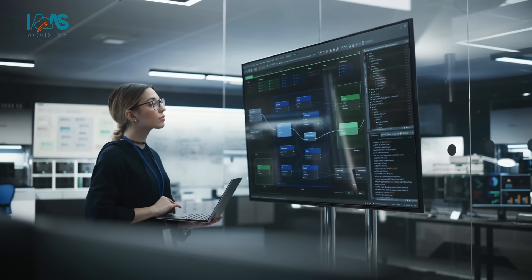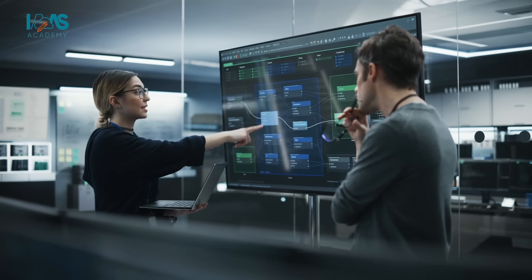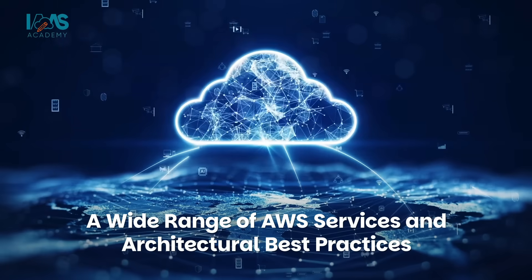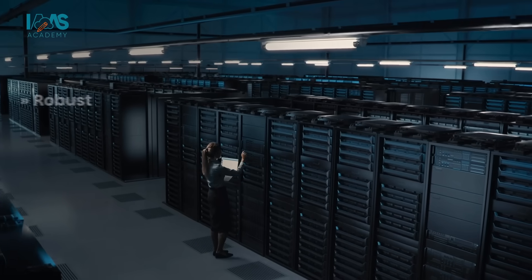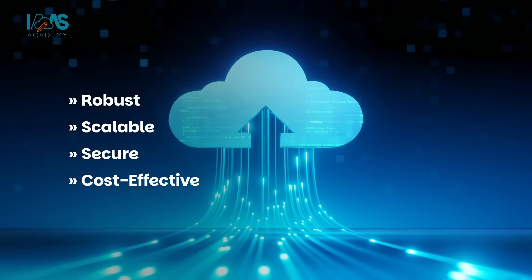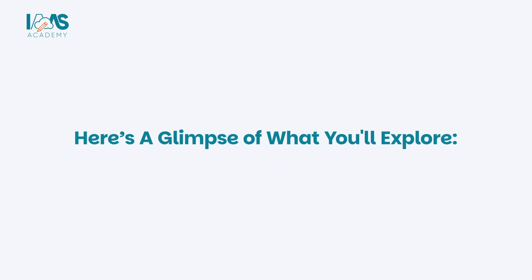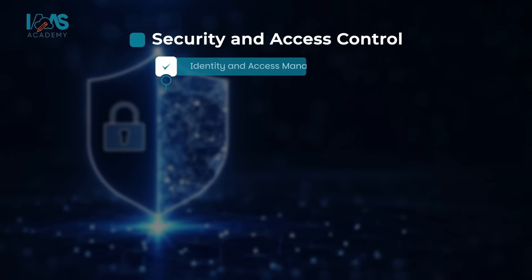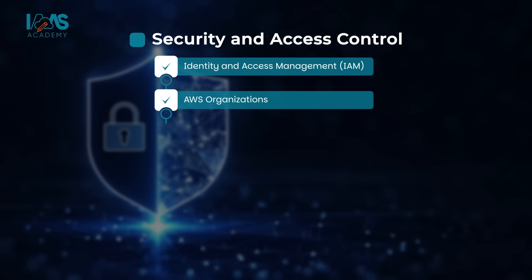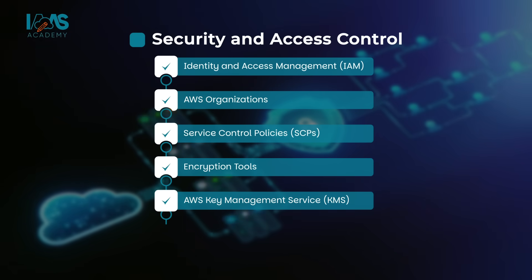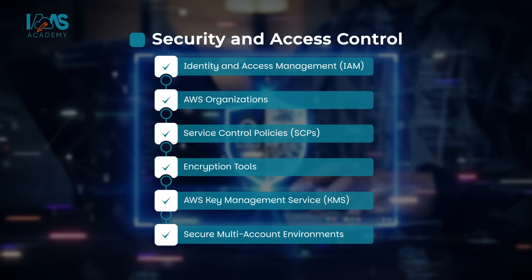Once you've mastered the basics, we'll build on your knowledge by diving deeper into a wide range of AWS services and architectural best practices to help you design robust, scalable, secure, and cost-effective cloud solutions. For security and access control, you'll learn about Identity and Access Management (IAM), AWS Organizations, service control policies, and encryption tools like the Amazon Key Management Service (KMS) to build secure multi-account environments.